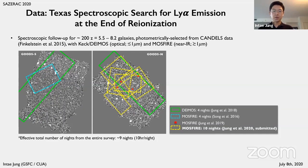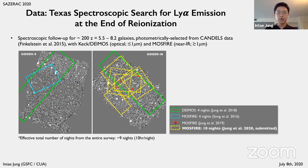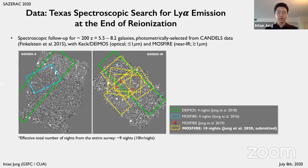Searching for Lyman-alpha emission at around the end of reionization, we performed deep spectroscopic follow-up observations for nearly 200 high-redshift candidate galaxies with KECK-DEIMOS and MOSFIRE. This plot shows the entire survey program in the GOODS field. Today I'm presenting the results from the entire MOSFIRE observations in GOODS North, as shown in the yellow rectangles. The rest of the survey has been published in other publications. These MOSFIRE observations targeted around 70 redshift-seven candidate galaxies with six different mask designs for 10 nights of observations in total.